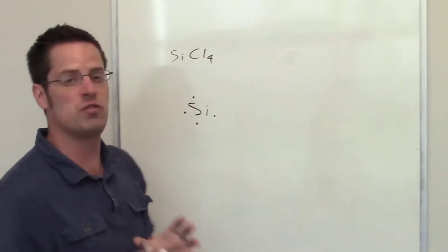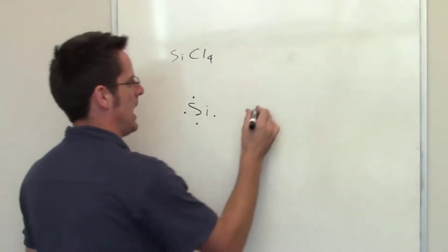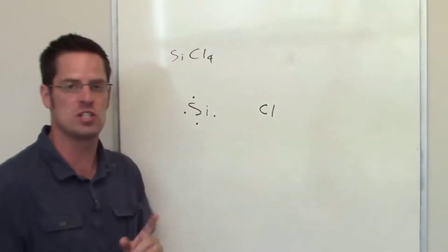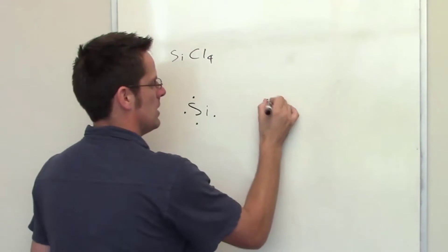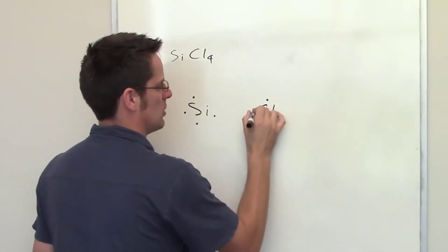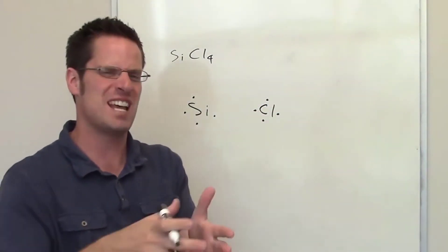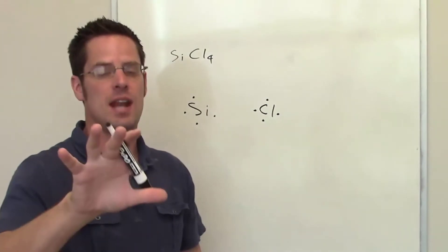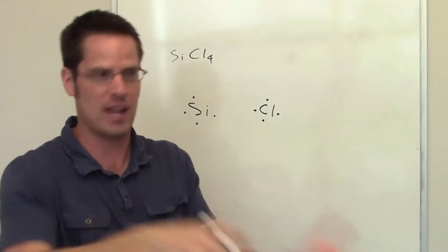When this silicon interacts with four separate and individual chlorine atoms, we can draw those chlorine atoms in Lewis symbols by also drawing each of their seven electrons. And you should know that chlorine is in column 7a of the periodic table, which means that a chlorine has seven valence electrons.